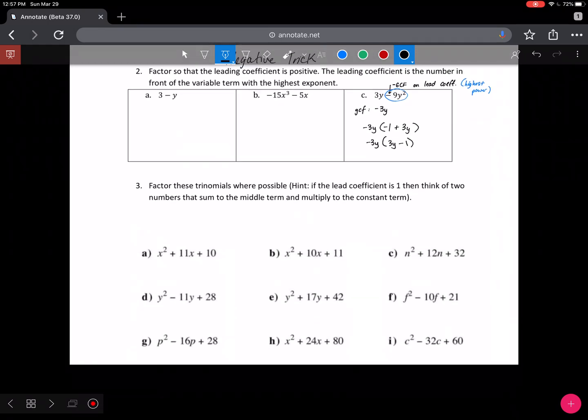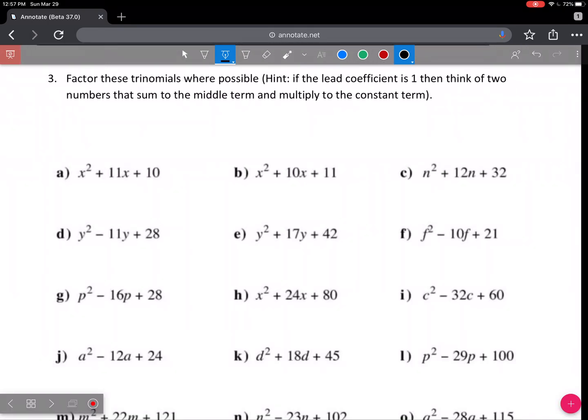The other type of factoring that you have to be responsible for later in the course when we do equation solving are simple trinomials of the type x squared plus bx plus c. These are a special type where the lead coefficient is 1. All you have to do in order to factor these polynomials is think about what two special numbers are going to multiply to the constant. So I need two special numbers that times to 10 positive and two special numbers that add to 11 positive, so these two numbers of course are 10 and 1.